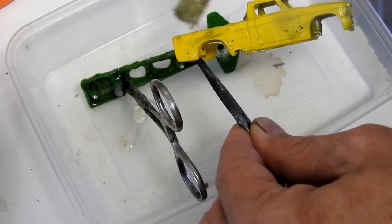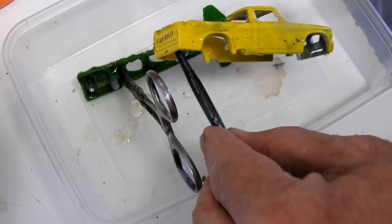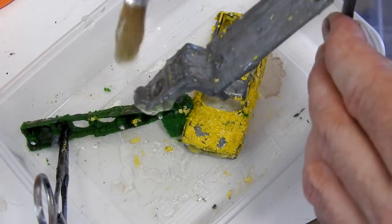Great, now that those are taken apart, I can use some paint stripper to strip the paint off of the castings.